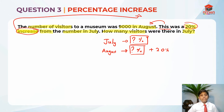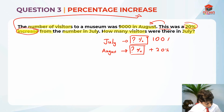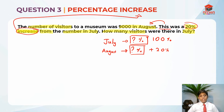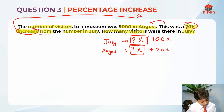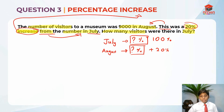Here we need to use the concept of using the base. The base is always 100%, so July is 100%. The base is where the increase or decrease is coming from. So if the increase is from July, then July is the base. The keyword is 'from July,' so July is the base.